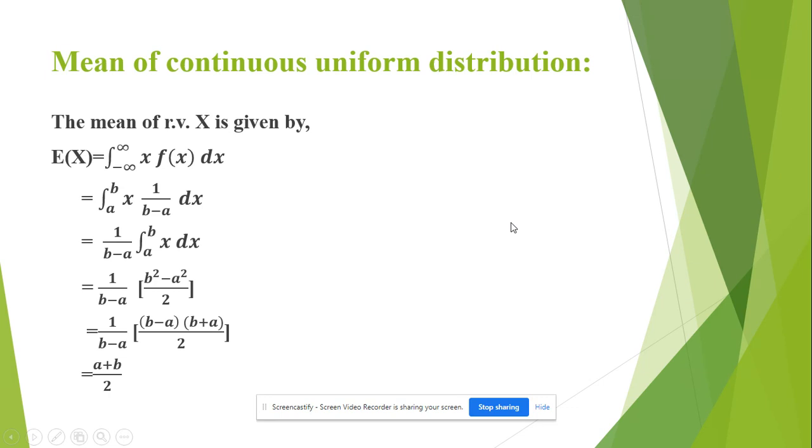Now let us see the mean of continuous uniform distribution. The mean of a continuous random variable X is given by expected value of X equal to integration minus infinity to infinity x f(x) dx where f(x) is the pdf of continuous uniform distribution.